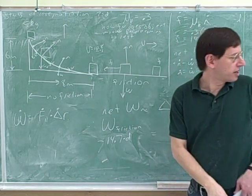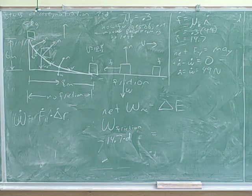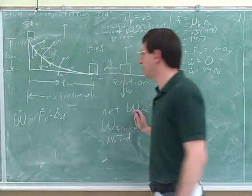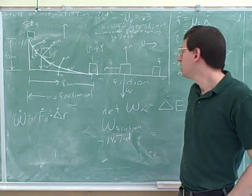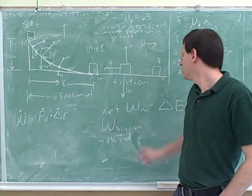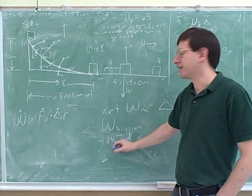What were we working on in our approach? I guess we were still working on step five. We were trying to figure out the work done by each of the non-conservative forces. Well, we decided that we don't need to include the weight here, because the weight is conservative. We just figured out the work done by friction. That's negative.